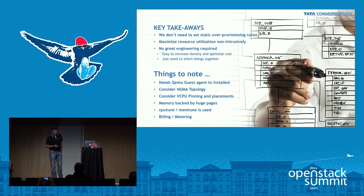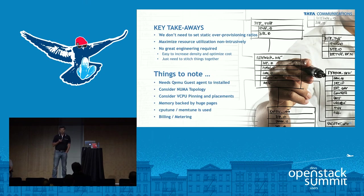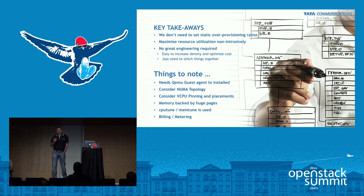We plan to evaluate workload characterizations to do modeling, fine-grained monitoring, and storage monitoring. Key takeaways: we don't need to set static over-provisioning ratios anymore. Using performance metrics, you can do right-sizing and right allocation without impacting performance of VMs. We've maximized resource utilization non-intrusively. Previously, flavor resize would shut down the VM causing disruption. Now with this new API, you can do vertical scaling from the minimum reservation to the maximum upper limit without disruption, and beyond that you can do live migration or horizontal scaling. No great engineering required — it was all there, we just added code to connect things together.